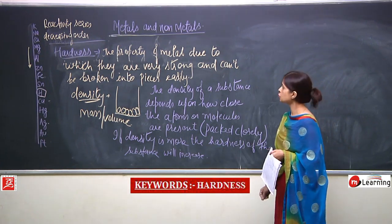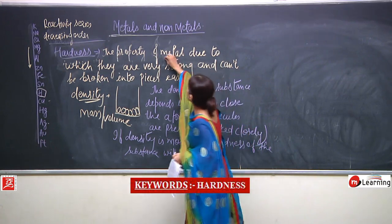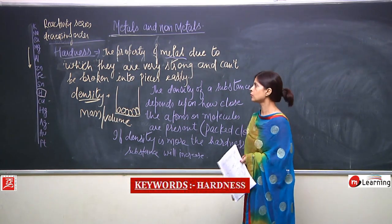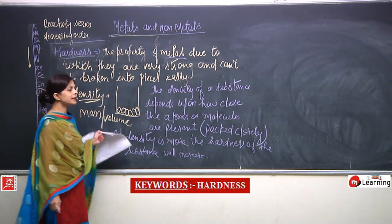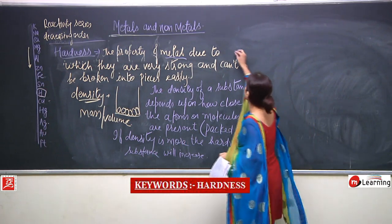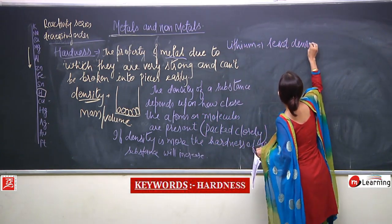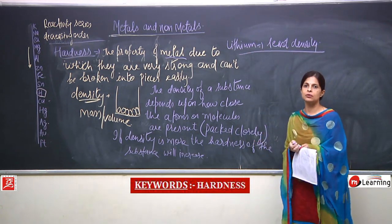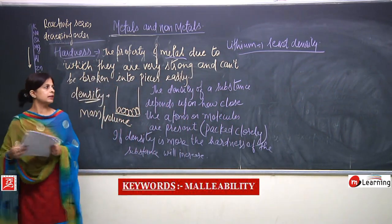So the hardness of metal is the property due to which they are very strong and cannot be broken into pieces easily. This topic is related to metals. If the molecules are very closely packed, density will increase, and if density increases, hardness will also increase. For example, lithium has the least density among metals, meaning its atoms are not very closely packed compared to others.